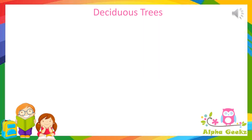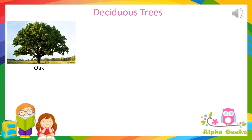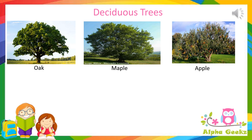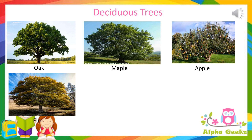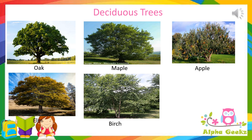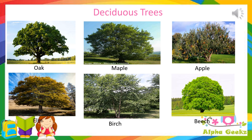Examples of deciduous trees include oak, maple, apple, elm, birch and beech.